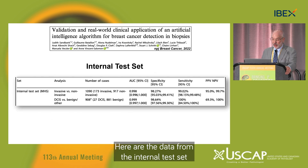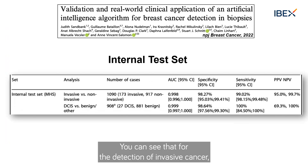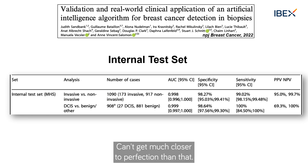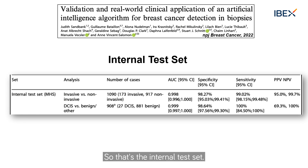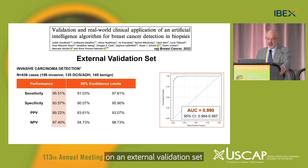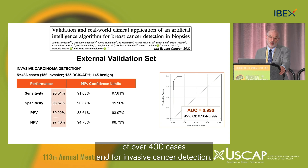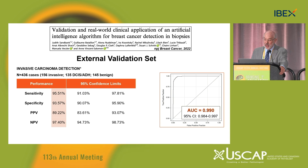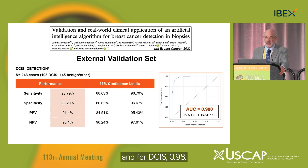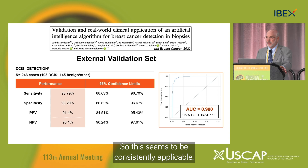Here are the data from the internal test set. For the detection of invasive cancer, the AUC was 0.998, and for DCIS, 0.999 — you can't get much closer to perfection than that. This was validated on an external validation set of over 400 cases. For invasive cancer detection, the AUC on the external validation set was 0.99, and for DCIS, 0.98. So this seems to be consistently applicable.